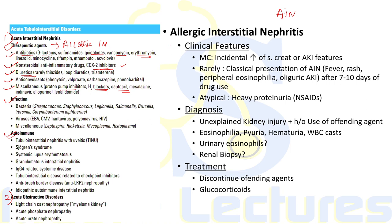Patients most commonly present with incidental rise in serum creatinine or features of AKI. Rarely, the classical presentation of AIN — fever, rash, peripheral eosinophilia, and oliguric AKI — is seen after seven to ten days of drug use. Atypical reactions like heavy proteinuria are commonly seen with NSAID use.